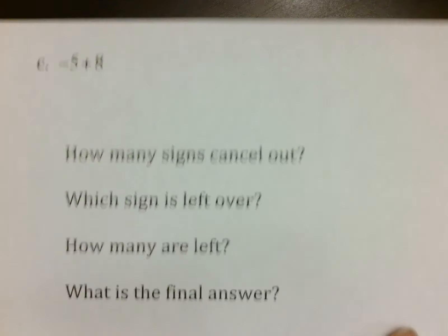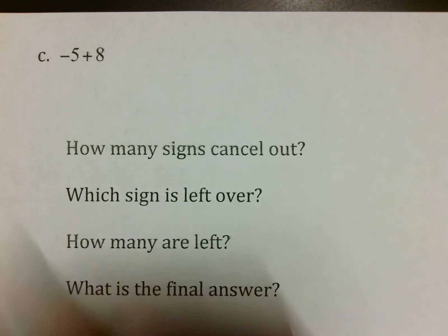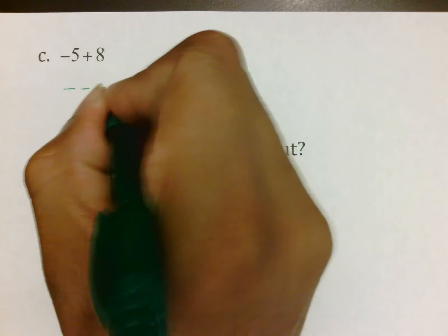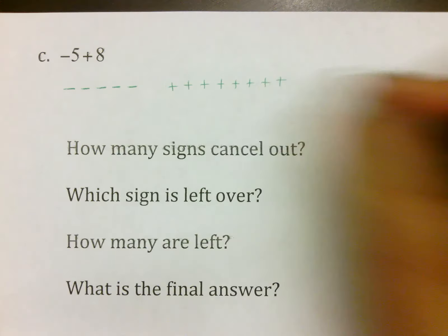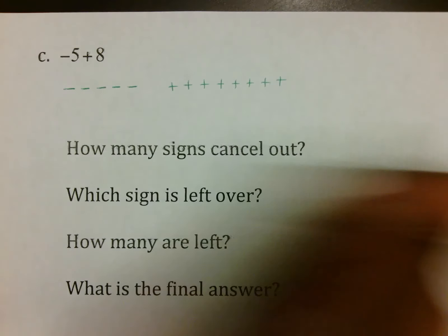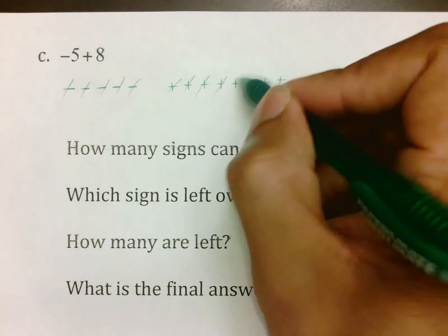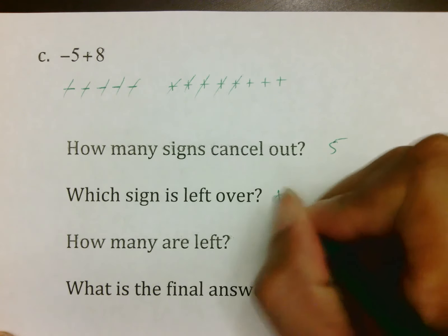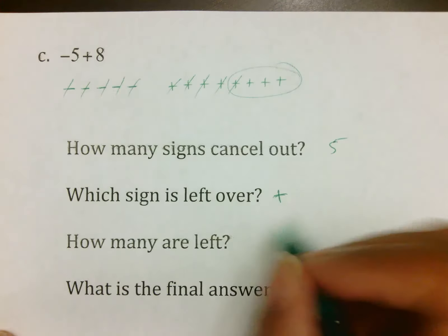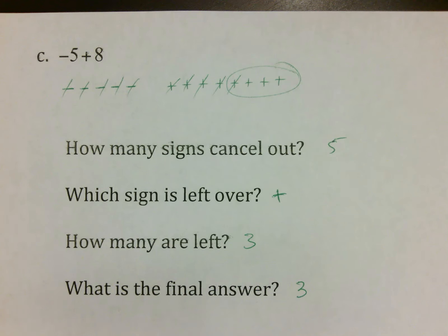For negative 5 plus 8: first, put five negatives — 1, 2, 3, 4, 5. Then positive 8 — 1, 2, 3, 4, 5, 6, 7, 8. How many cancel? 1, 2, 3, 4, and 5 — so five sets cancel. Which sign is left over? The plus. How many are left? Three. Your final answer is 3. Remember, you don't need to put a plus sign in front of it because 3 is already positive.